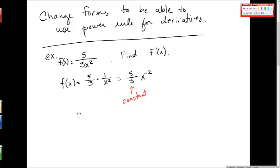So the way I take this derivative, f'(x), is negative 2, this exponent comes down out front, times 5 thirds times x to the minus 2, and I subtract 1.